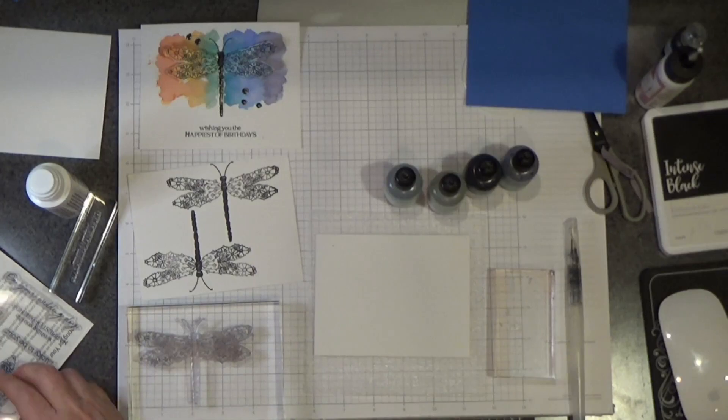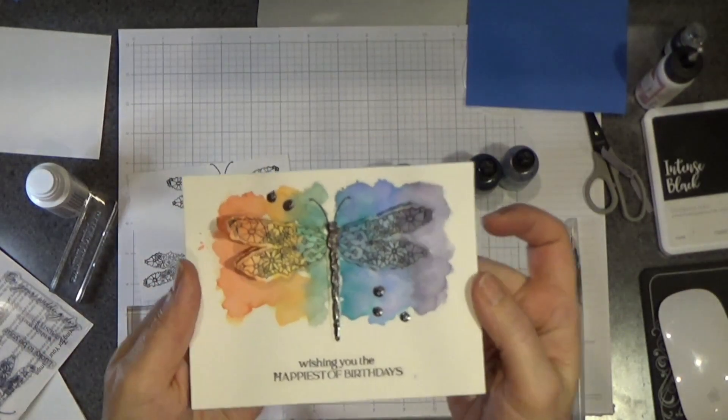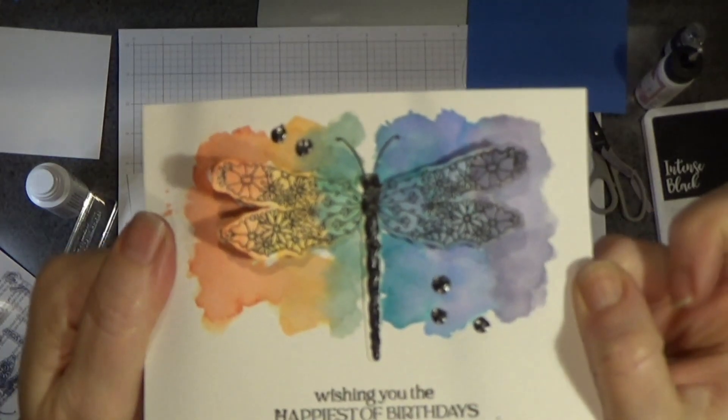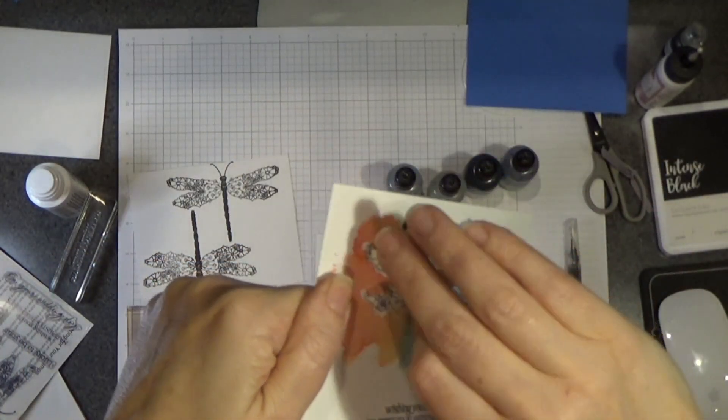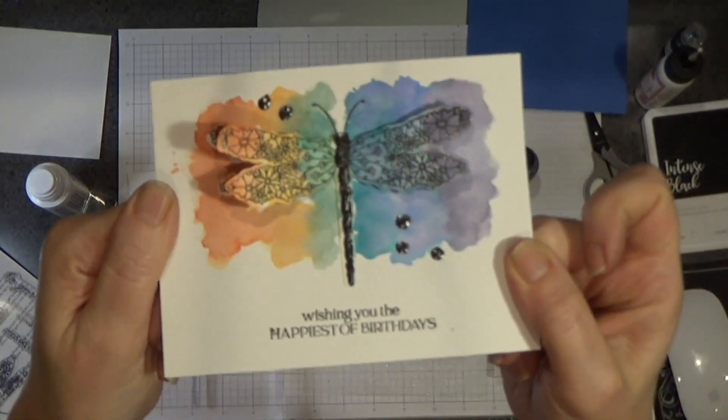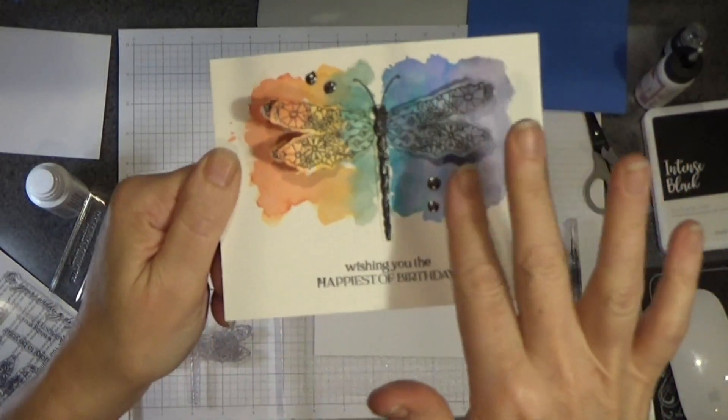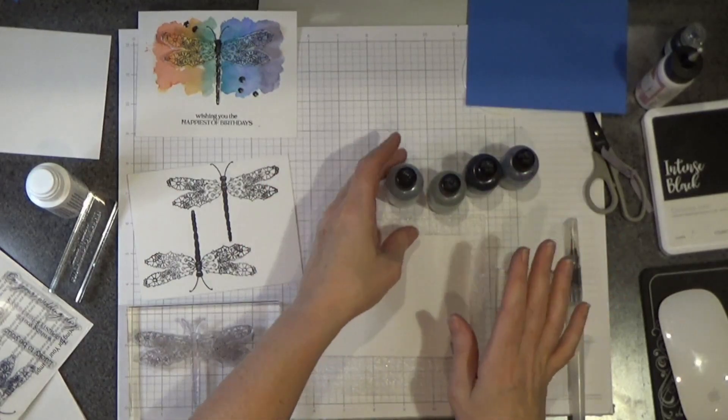Today we are going to be creating a card with this technique. I don't know what we're going to call it. It's kind of a layery, inky technique. This one I did with rainbow colors. Today we're going to do more subdued colors.